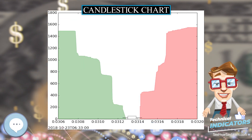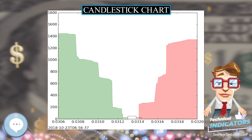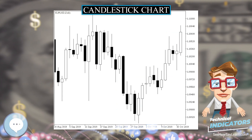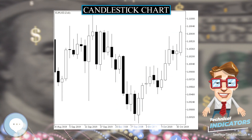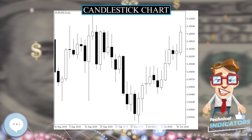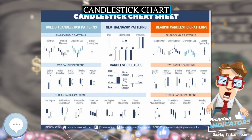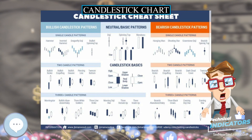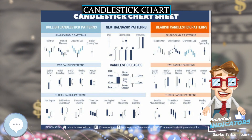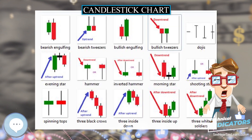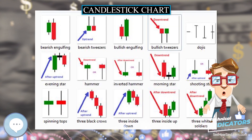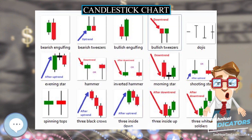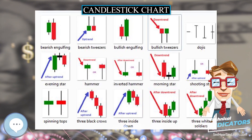A candlestick need not have either a body or a wick. Generally, the longer the body of the candle, the more intense the trading. A hollow body signifies that the stock closed higher than its opening value. A filled body signifies the opposite.